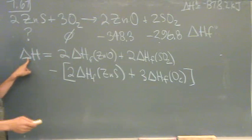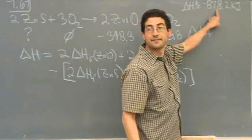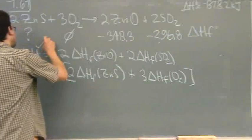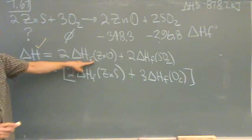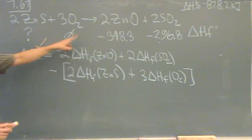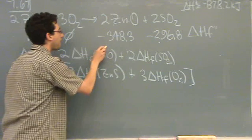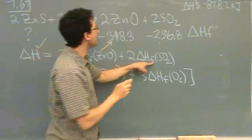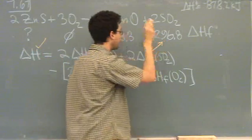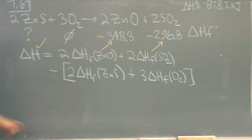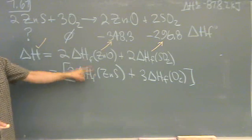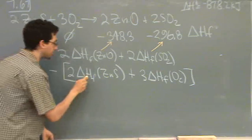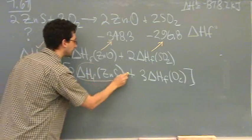Delta H overall, right here. Check. Delta H of formation of zinc oxide, right here. Delta H of formation of the sulfur dioxide, right there. Delta H of formation of the zinc sulfide - that's what we want to know. So I'll just circle it. We want this. Solve for that.